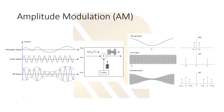Looking at the signals: on the left, the first is our information signal with low frequency ωm. The second is our carrier signal with high frequency ωc. If we multiply these two signals using a mixer we produce the AM signal. The AM signal has a constant frequency but its amplitude changes all the time, and this change is proportional to our information signal — you can basically see our data embedded in the wave.